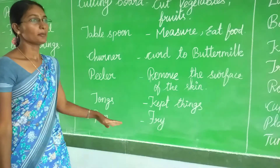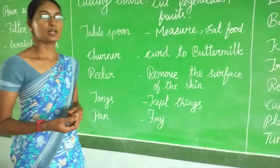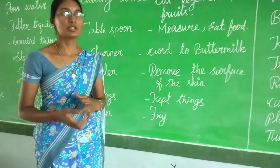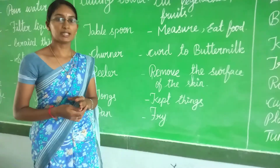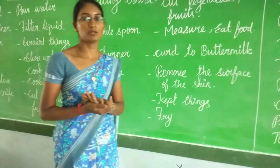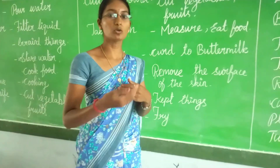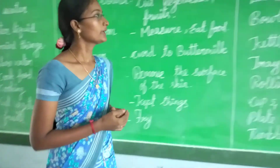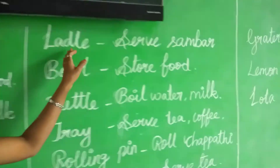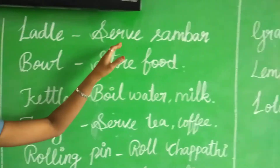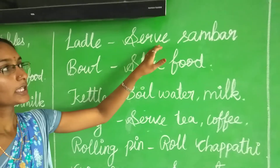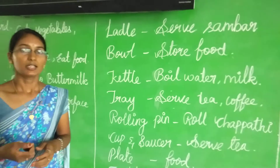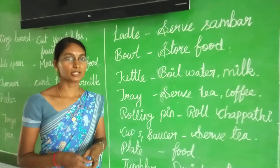Next, pan. Pan means it is used to fry chicken or mutton. If we cook and fry items, pan is used. Next one is ladle. Ladle is used to serve sambar. It is used to serve sambar and curries.